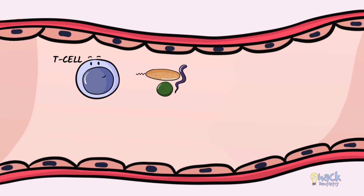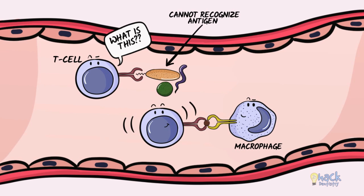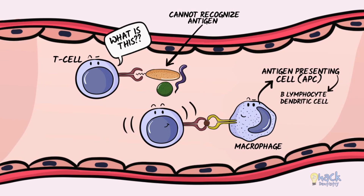T lymphocytes cannot directly recognize or be activated by antigens on microbes or those that are extracellular in circulation. They are rather programmed to recognize antigens that are presented to them by antigen-presenting cells like B lymphocytes, macrophages, dendritic cells, or other nucleated cells.